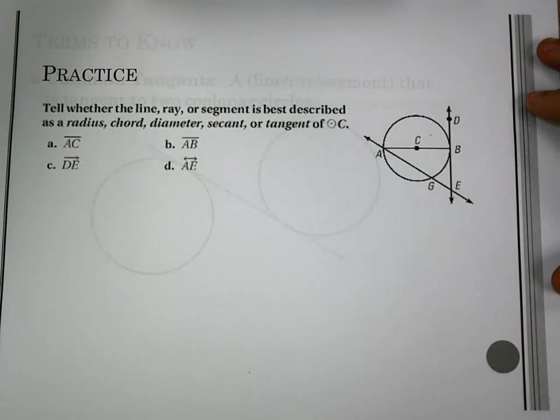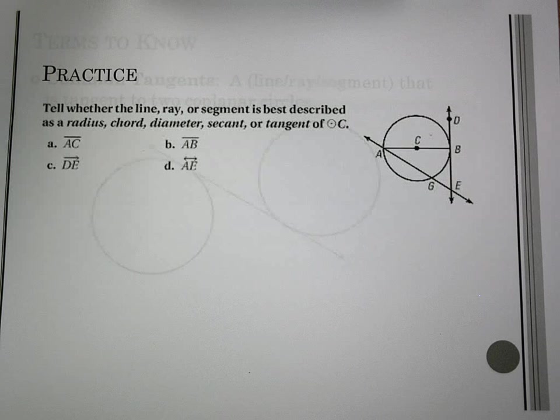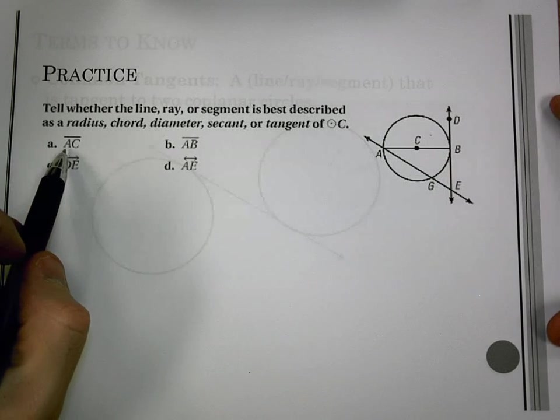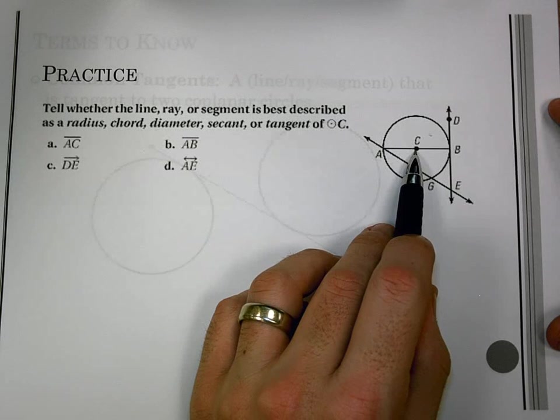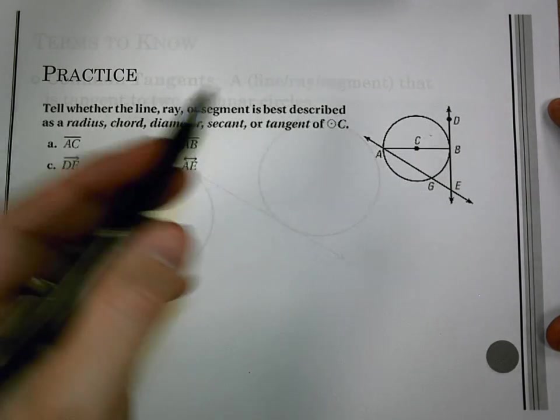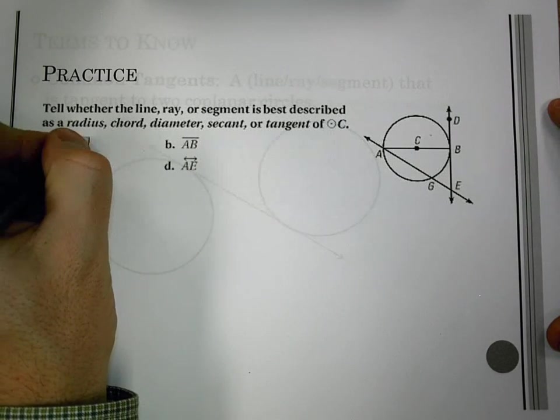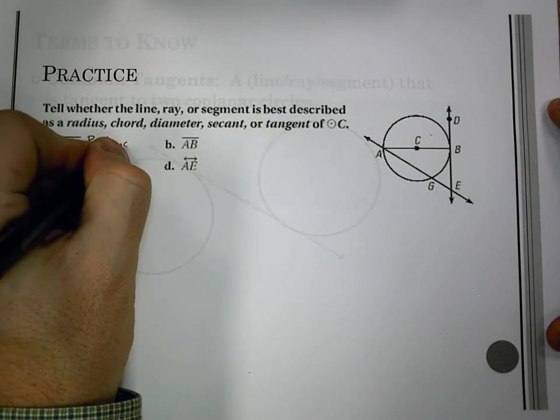So if we look at applying these now, we have an example. We have to determine whether a line, ray, or segment is a radius, chord, diameter, secant, or tangent. If I look at AC, AC is a segment. It's going to be a segment that starts at A, ends at C. It ends on the center of the circle. So that's going to make it a radius.